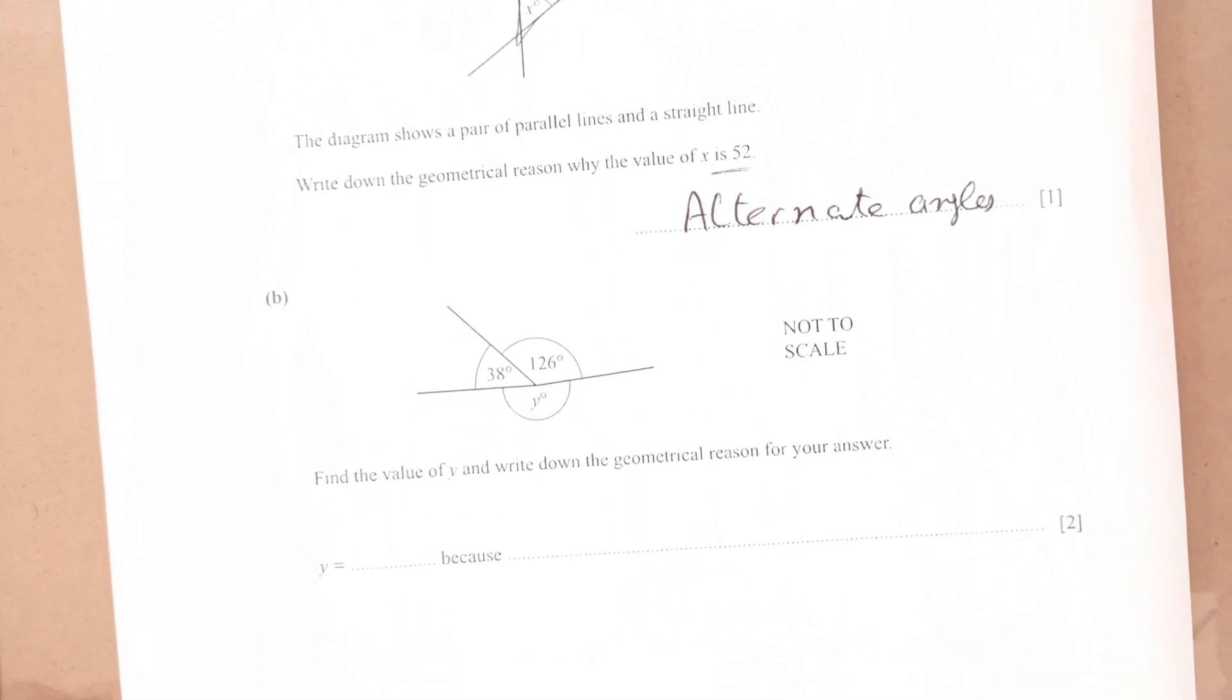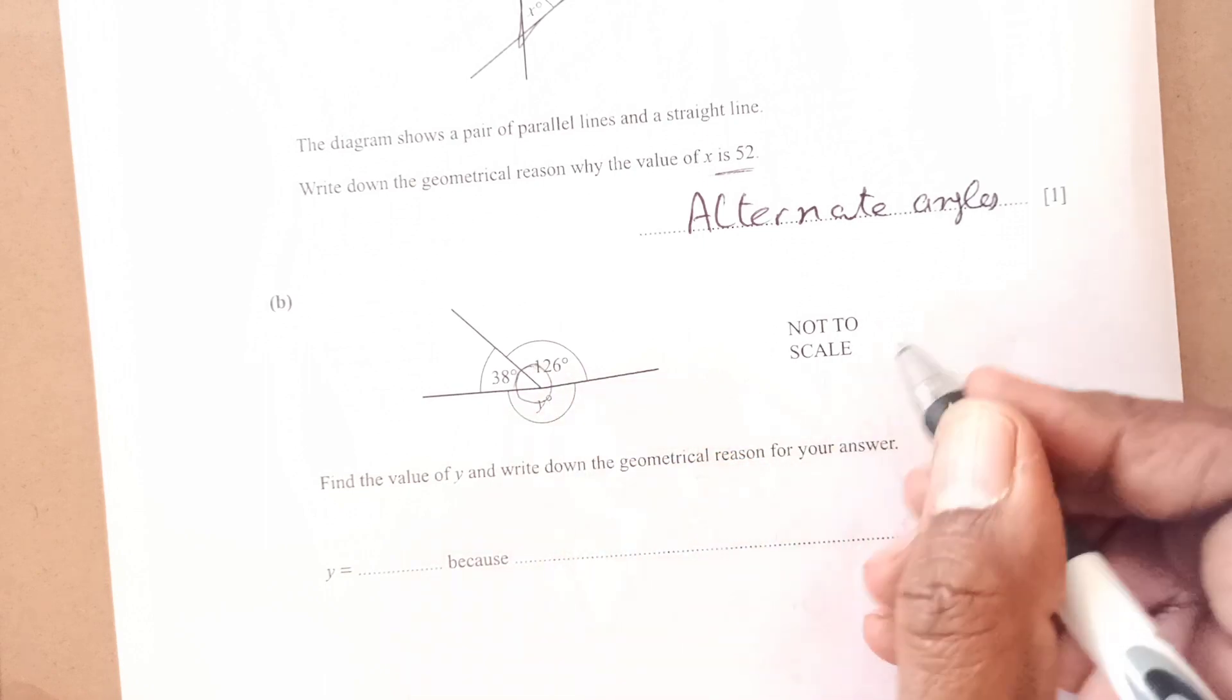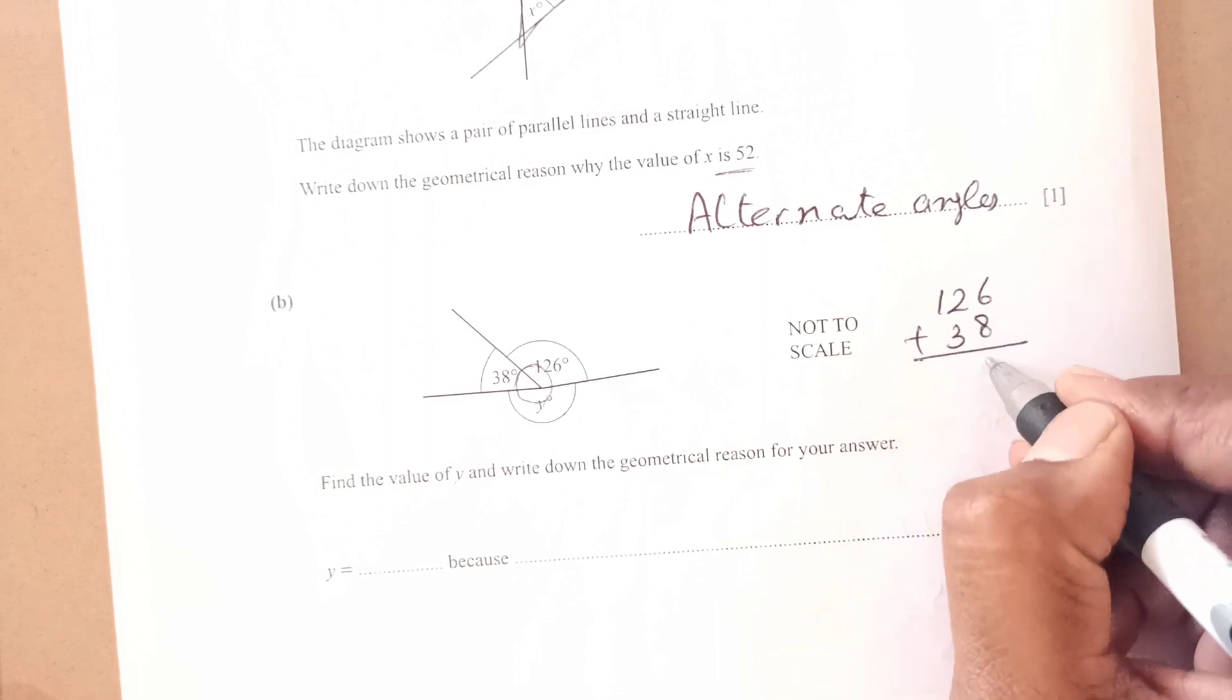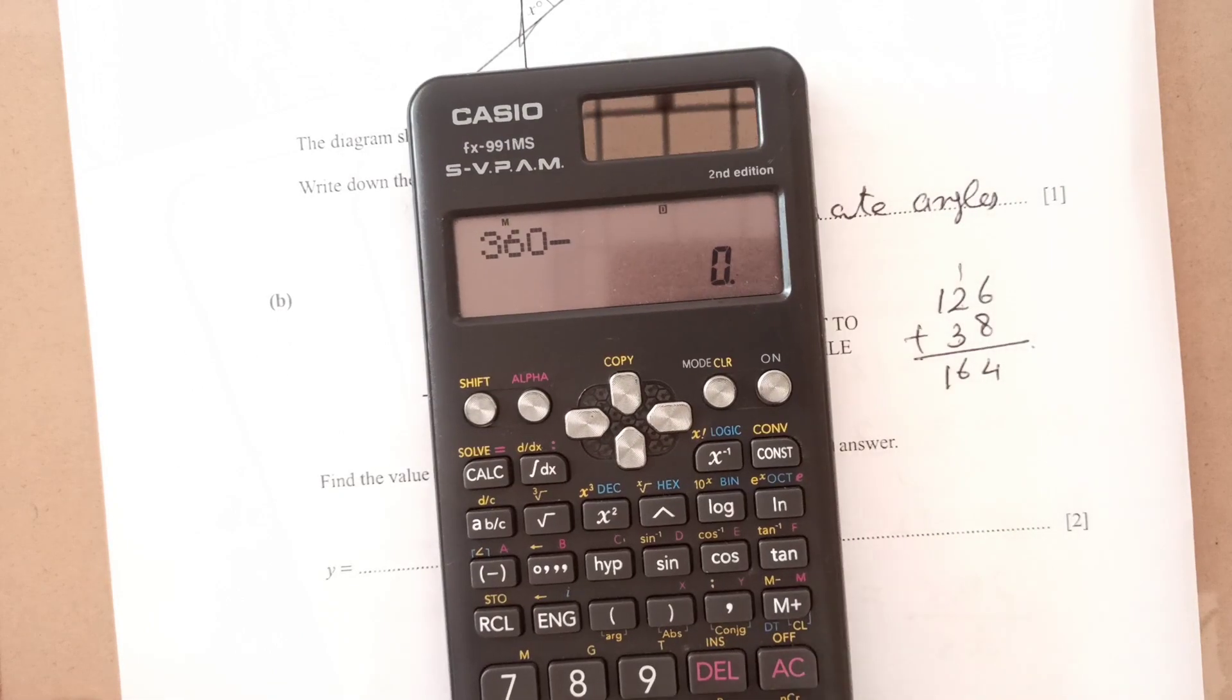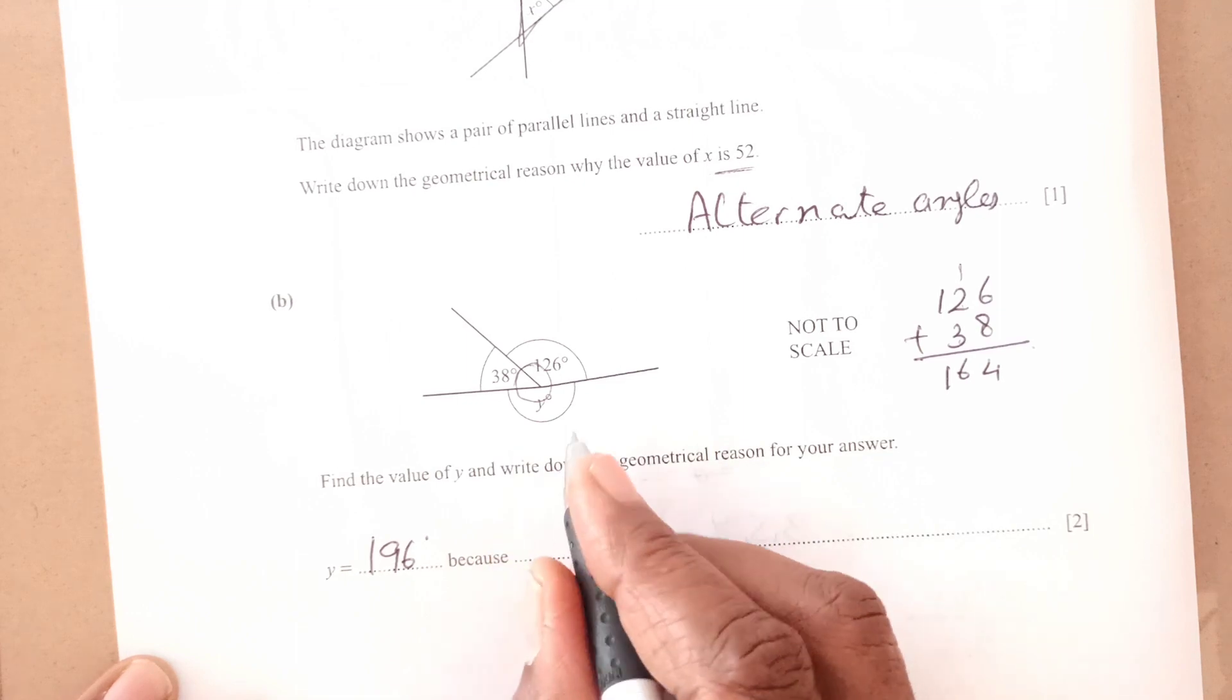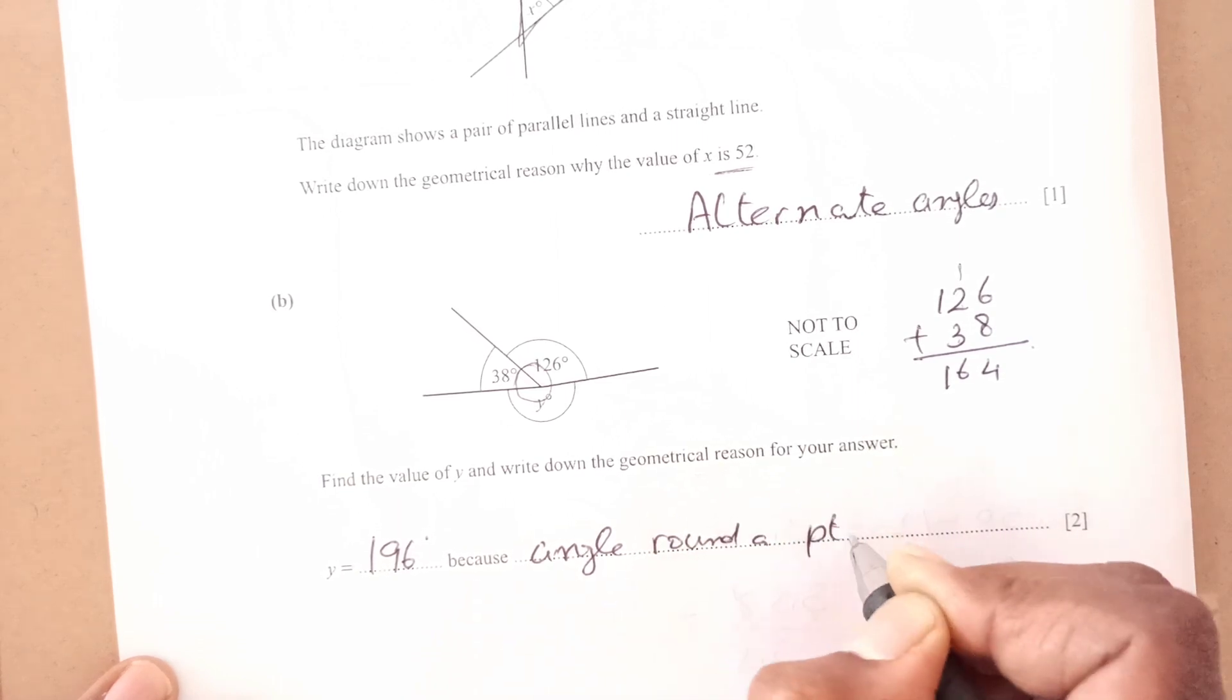Part b. So we have this diagram here. Find out the value of y and write down the geometrical reason for your answer. Now, this total is 360. So we are going to add 126 plus 38, 8 plus 6, 14, 5, 6, 164. We will subtract this from 360, 360 minus 164 which is 196, 196 degree because the angle rounded point. Why? Because angle round a point is 360. That is how we calculate.